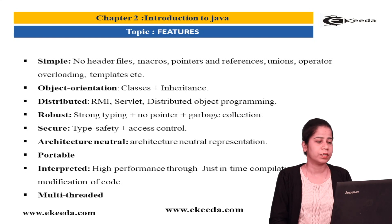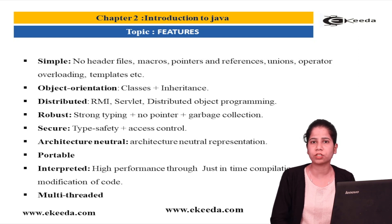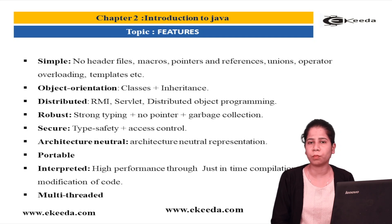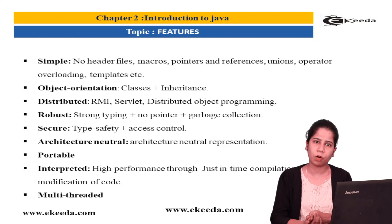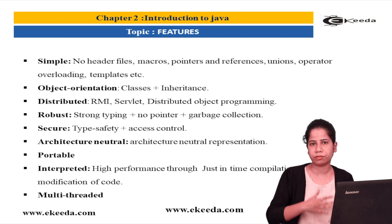The second feature is that Java is an object-oriented language. We have already seen what object orientation is all about. Any language which supports the four major pillars of object orientation is qualified as an object-oriented language. Though Java is not fully object-oriented, it still provides those four important pillars: abstraction, encapsulation, inheritance, and polymorphism. Apart from these, it also provides many other features like type safety.